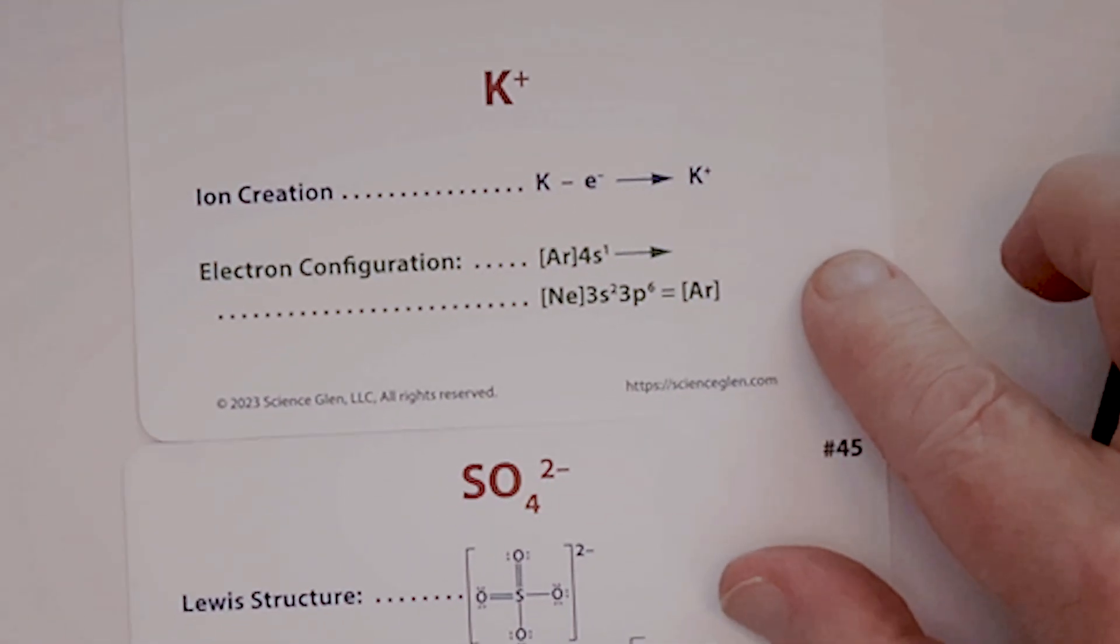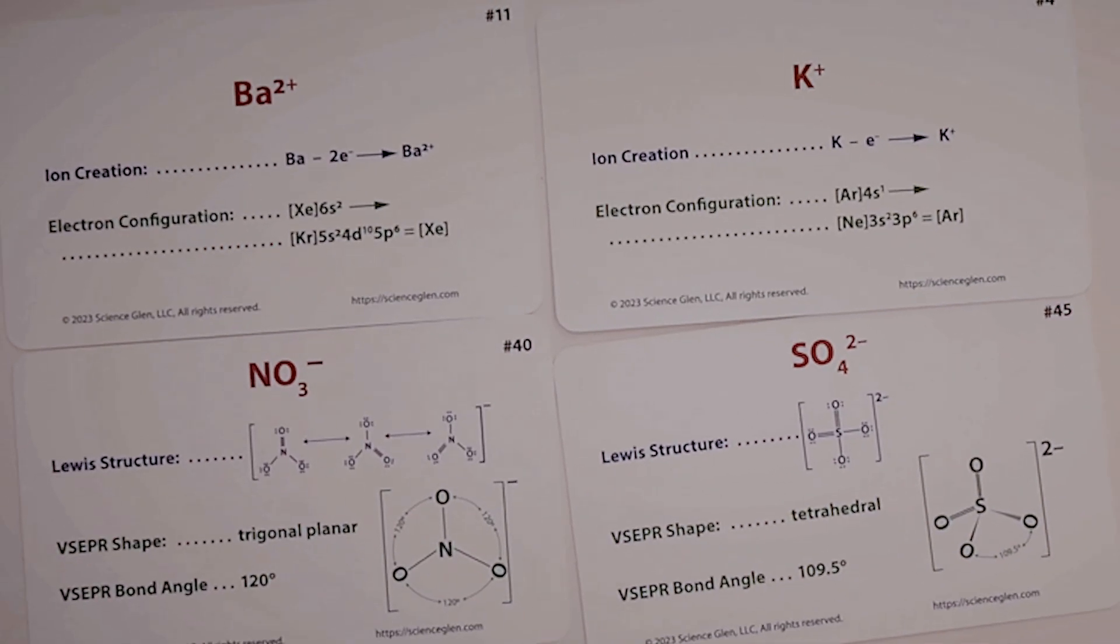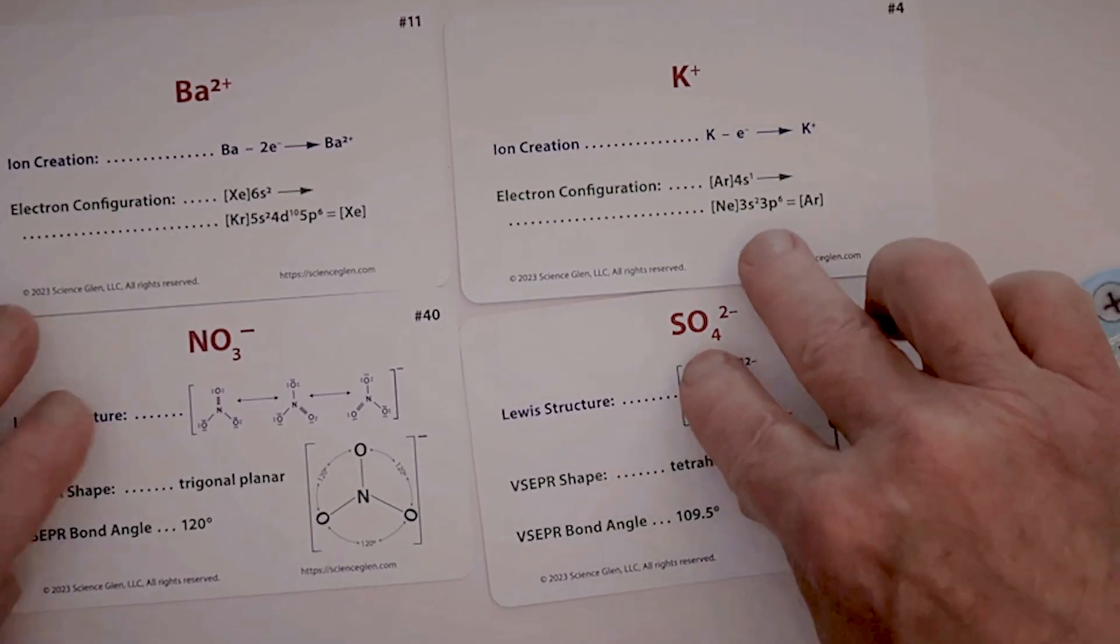So now we're going to have barium nitrate, potassium sulfate, and you can see that's an unbalanced reaction. Using the ionic bond disk model, it makes it very much easier to understand this.